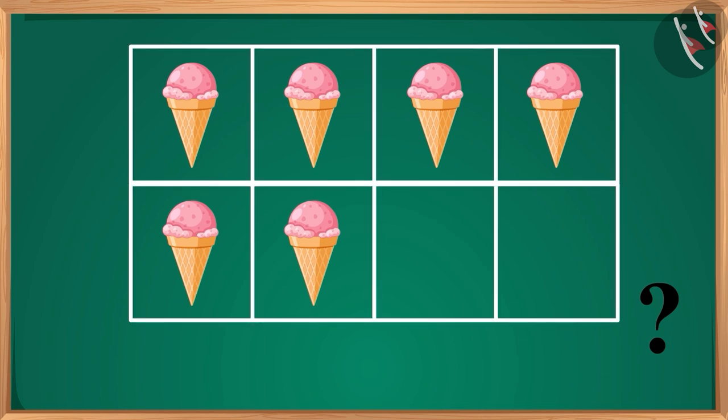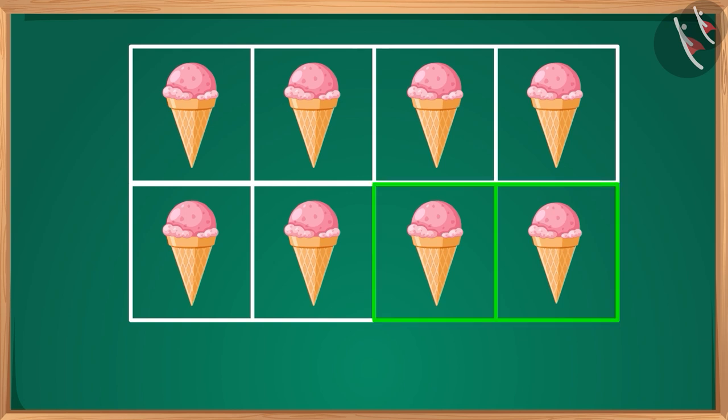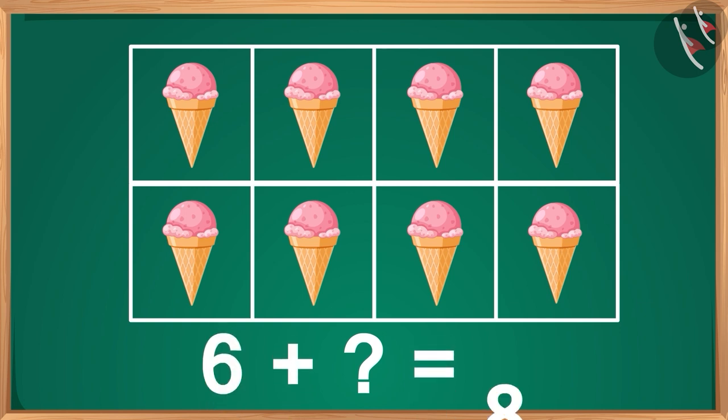Come, let's see: one and two. We will need two more ice creams to fill all the eight frames. In other words, we can say: how many ice creams do we need to add to six to make eight? As we saw, six plus two equals eight.